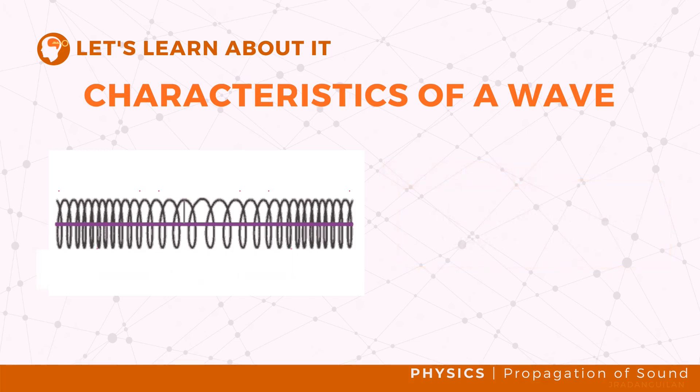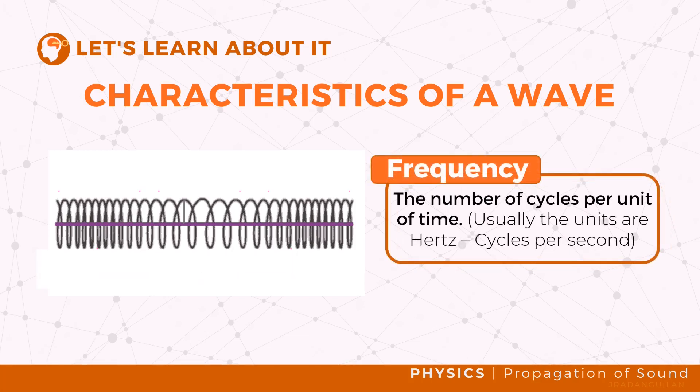Frequency is the number of vibrations of a sound per unit of time, expressed in the number of waves per second. The frequency is inversely proportional to wavelength, meaning that waves with higher frequencies have shorter wavelengths.